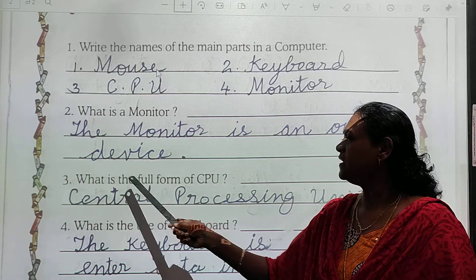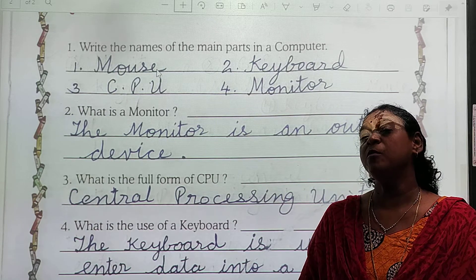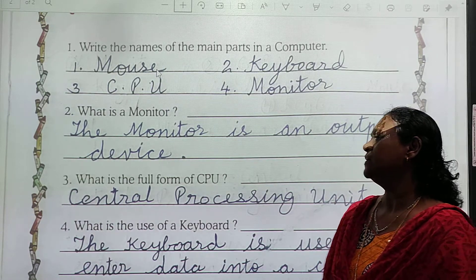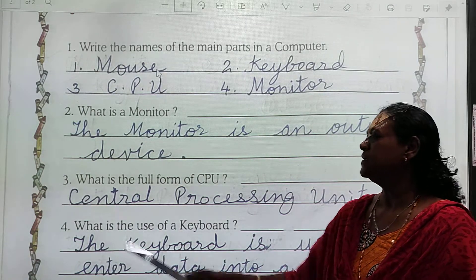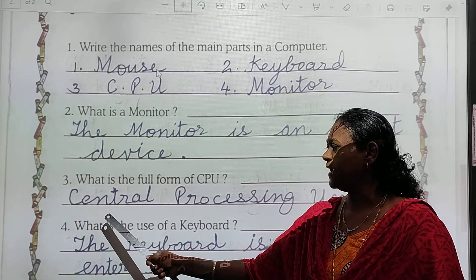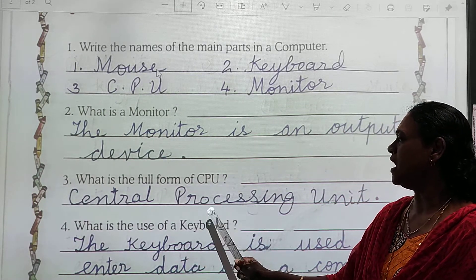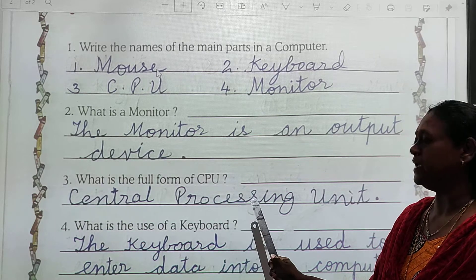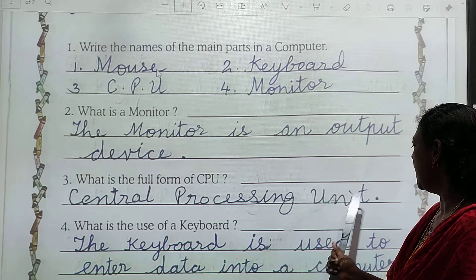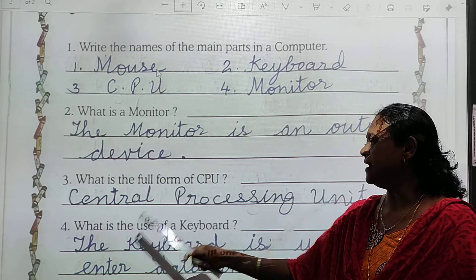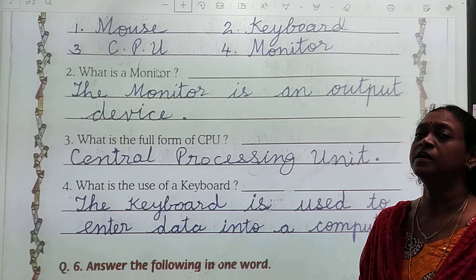Now what is the full form of CPU? CPU ka full form kya hai? That is Central Processing Unit. Central ki spelling: C-E-N-T-R-A-L. Central Processing: P-R-O-C-E-S-S-I-N-G. Unit: U-N-I-T. So — Central Processing Unit.